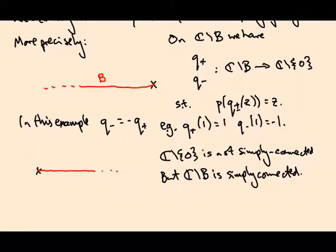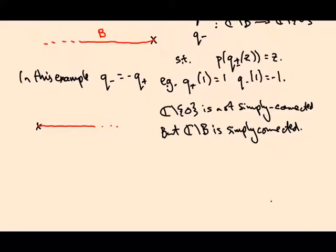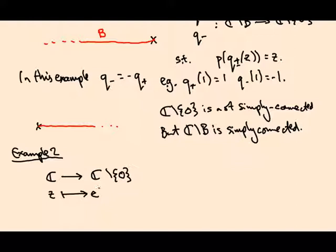A similar example: if you take the logarithm instead of the square root, we can do something similar. Let's take ℂ, just all of ℂ, mapping to ℂ\{0}, sending z to e^(iz). This is again surjective because any number has a logarithm except zero.